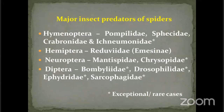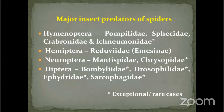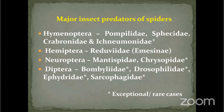The major predators of spiders under order Hymenoptera include families like Pompilidae, Sphecidae, Crabronidae, and Ichneumonidae — exceptional cases where grubs of Ichneumonidae act as predators of spider eggs. In Hemiptera, Reduviidae — specifically the subfamily Emesinae — are known to be specialists on spiders. Not all reduviids (assassin bugs) attack spiders. In Neuroptera, Mantispidae grubs are known to be parasites on spider eggs.